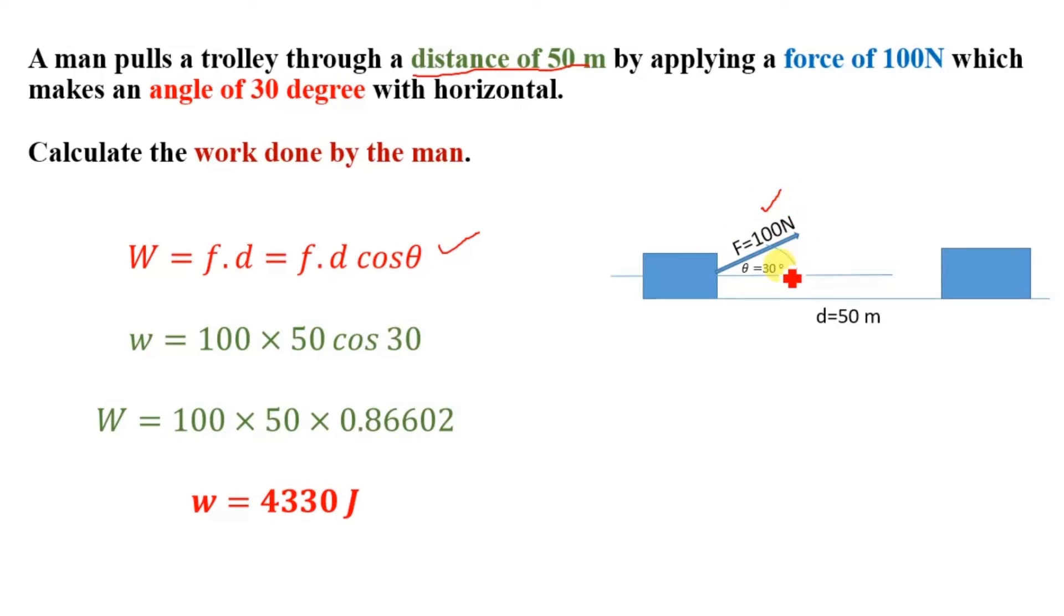We know force is 100 Newton, theta is 30 degrees, and distance is 50 meters. So we will have 100 × 50 × cos 30. Cos 30 is 0.86602, so multiplying all of these terms, you will get work done is equal to 4330 joules, and that is the required answer or the work done by the man.